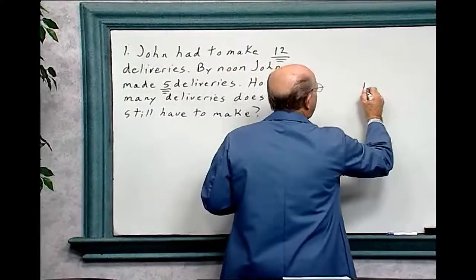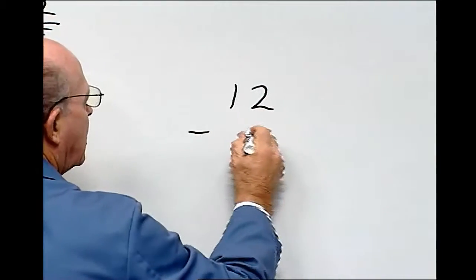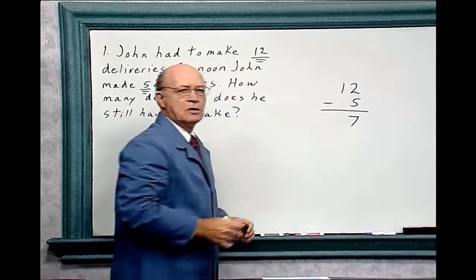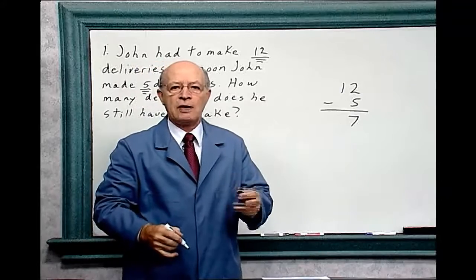So it's 12 minus 5 equals 7. John had to make seven more deliveries.